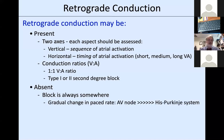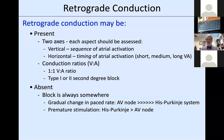When talking about retrograde conduction, I like fellows to think in two axes: the vertical axis—the sequence of atrial activation, whether concentric or eccentric—and the horizontal axis—the timing of atrial activation after a causal QRS, which can be a short, medium, or long VA interval. Conduction ratios (V-to-A) include 1:1, Type I or Type II second-degree retrograde block, or complete retrograde block.